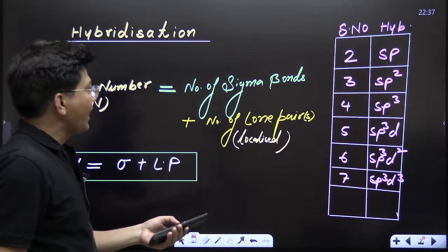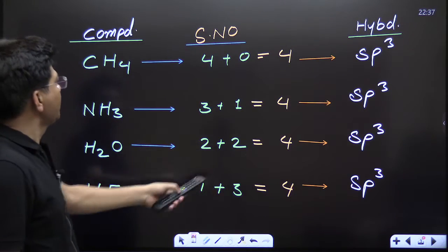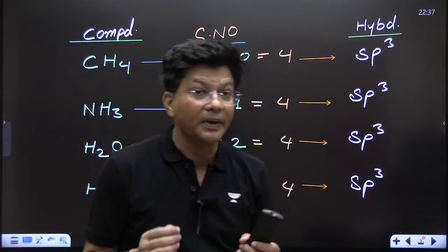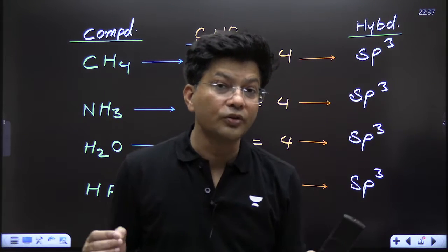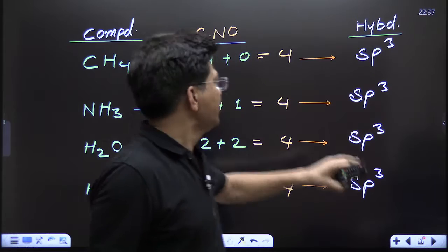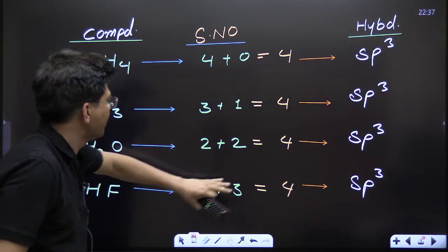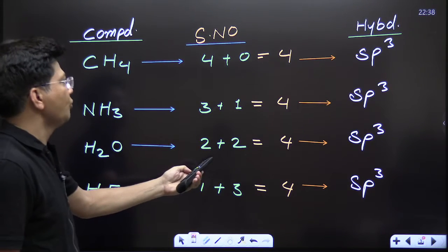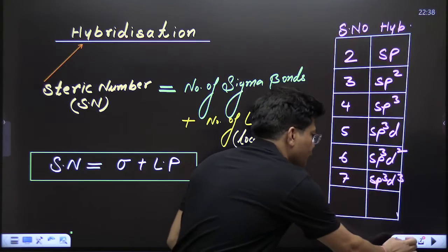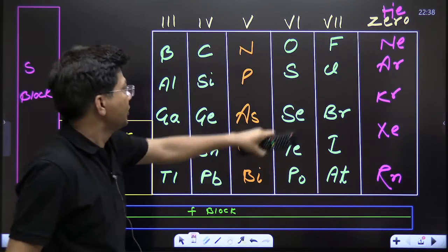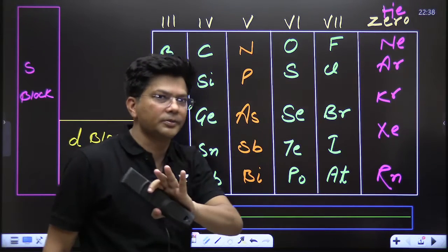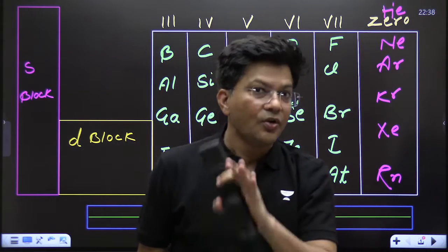How to find out the steric number — this is the most difficult thing to understand: how we are getting these steric numbers. To get command over this, we should know the p-block elements very well. I'm not going to deal with the whole periodic table, but we must have a very good command on p-block.